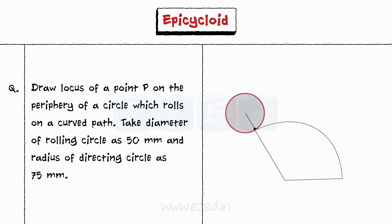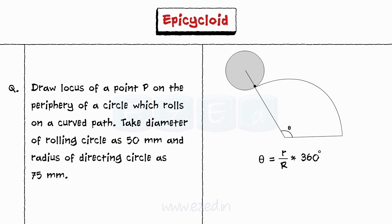When the smaller circle rolls on the larger circle for one revolution, it will cover pi D distance on the arc, decided by included arc angle theta. Calculate theta by formula: theta equals radius of rolling circle by radius of directing circle times 360. On calculating, we get the value of theta as 120 degrees.